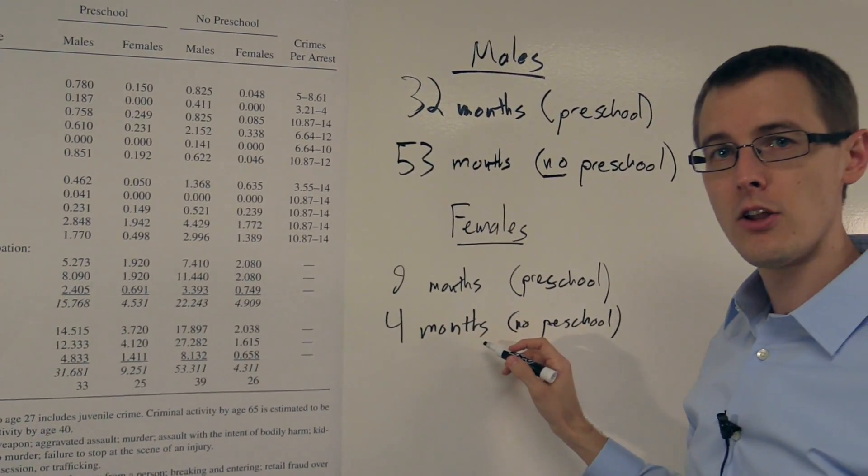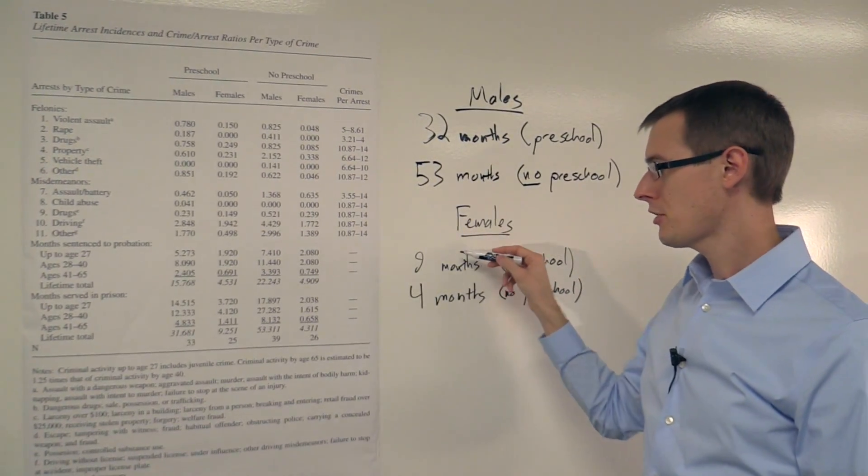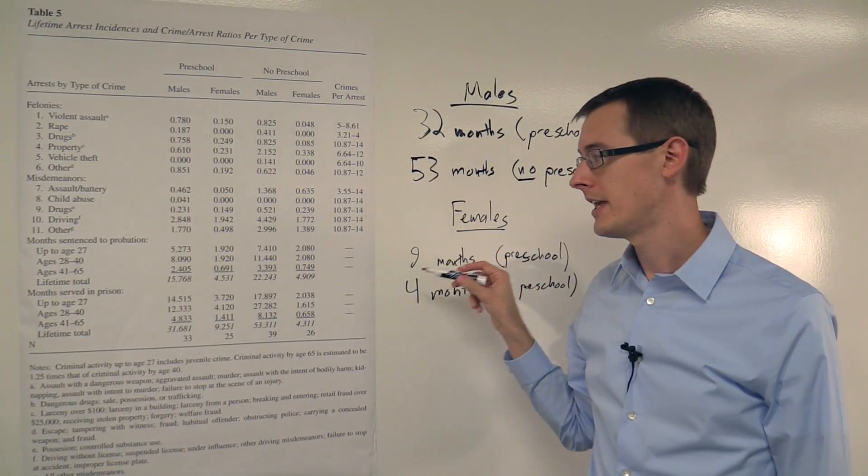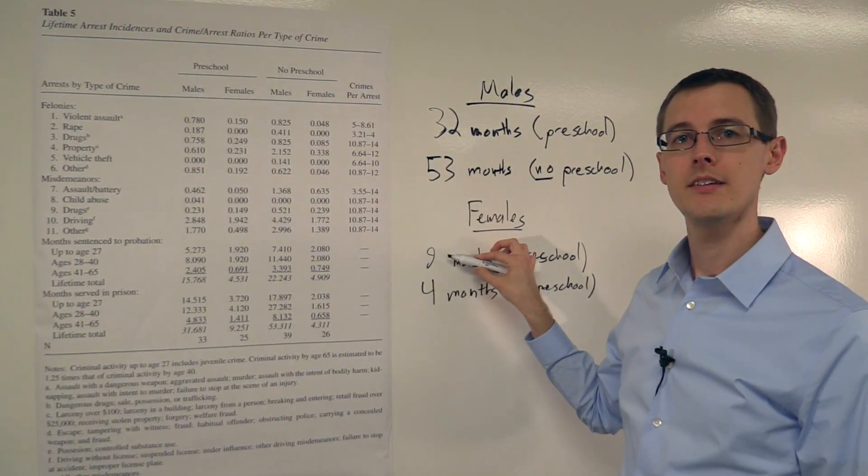So from this, it looks like the treatment, getting preschool, actually increased the number of months that females spend in prison on average, from four up to nine.